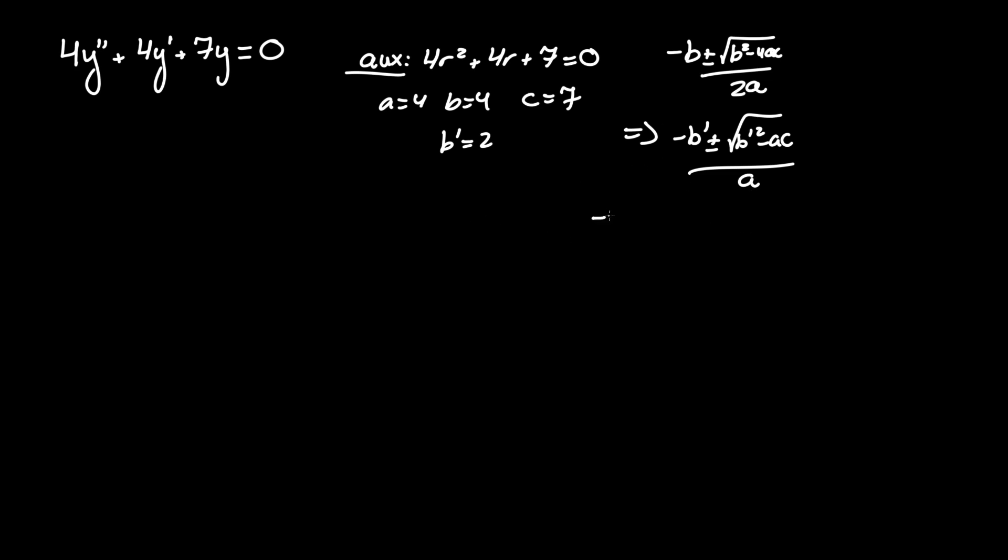Plugging these numbers in, we have minus 2 plus minus the square root of 2 squared, which is 4, minus ac, 4 times 7, all over a, which is just 4.